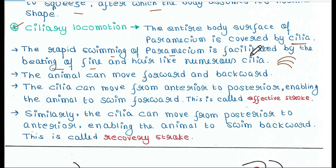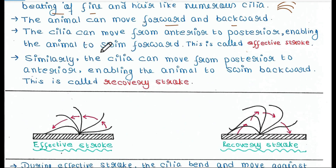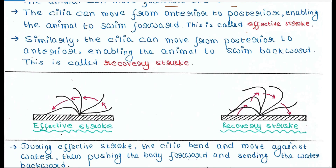These cilia are fine and hair-like, so the animal can move forward and backward. Cilia can move from anterior to posterior, enabling the animal to swing forward. Here, this is the anterior and this is the posterior — the cilia move in this direction, from anterior to posterior, enabling the animal to move forward in this direction. This is called the effective stroke.